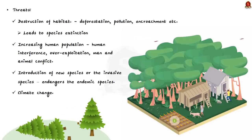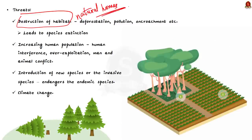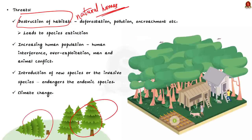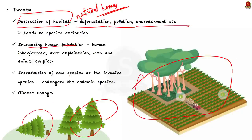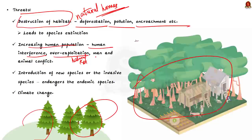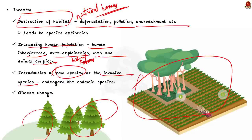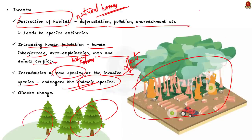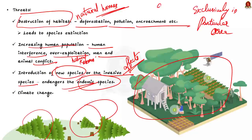The first and foremost threat is the destruction of habitat. Habitats are the natural homes of flora and fauna, providing food and surroundings for species to survive. If that is damaged, species will not survive, leading to their extinction. Destruction of habitat includes deforestation, pollution, and encroachment. The second threat is increasing human population, which increases human interference and over-exploitation of natural resources, leading to man-animal conflict. The third threat is the introduction of invasive species, which affects the natural habitat of endemic species and endangers their existence.